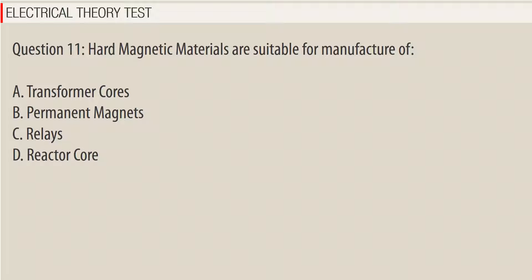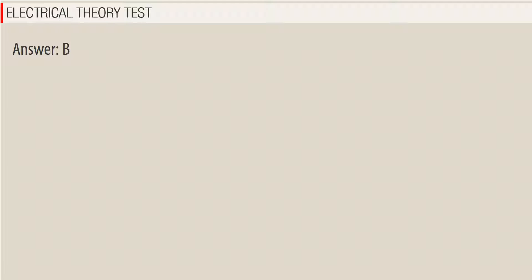Question 11. Hard magnetic materials are suitable for manufacture of: a. Transformer cores. b. Permanent magnets. c. Relays. d. Reactor core. Answer: B.